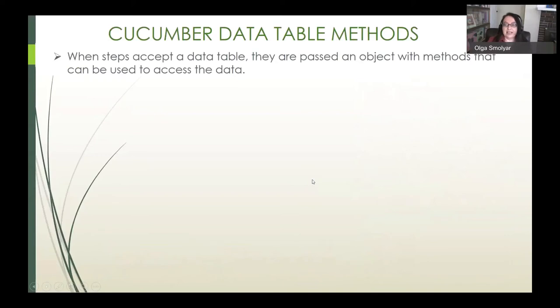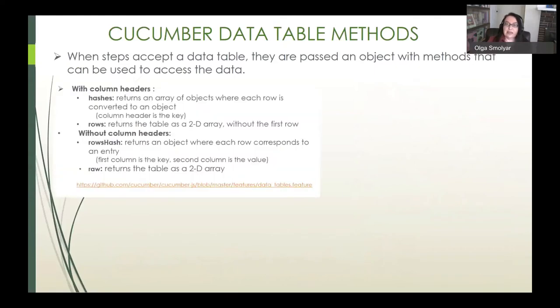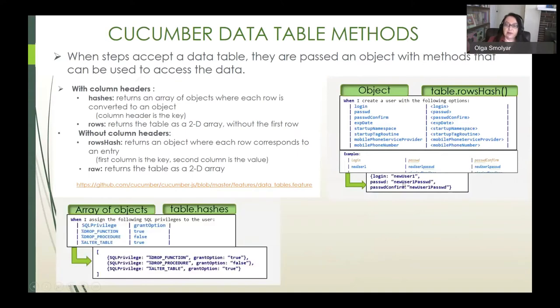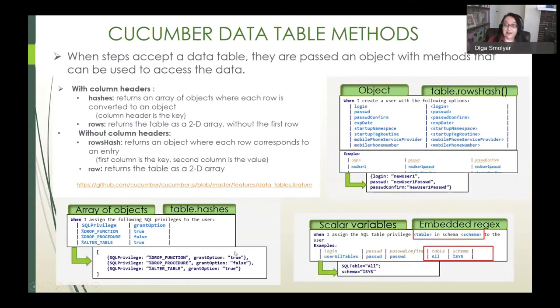Individual steps can also be configured to accept a table as an input parameter. This is a capability of Cucumber that we find particularly useful for streamlining and organizing our data visually. When steps accept a data table, they are passed an object with methods that can be used to access the data. Depending on the format in which the step data table is presented, along with the method that's used to parse it, different data structures are generated. The most common one, table dot rows hash, simply takes two columns interpreted as keys and values to create an object. Similarly, table dot hashes creates an array of objects corresponding to the rows of a table, and we'll come back to this one when looking at our process table validation utility. Scalar parameters can also be embedded in line in the step definition.